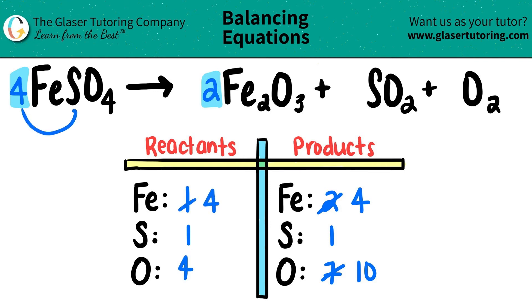I now have four sulfurs. So that turns into a four. And now I have four times four, which is a total of 16 oxygens. Okay. So irons are balanced.